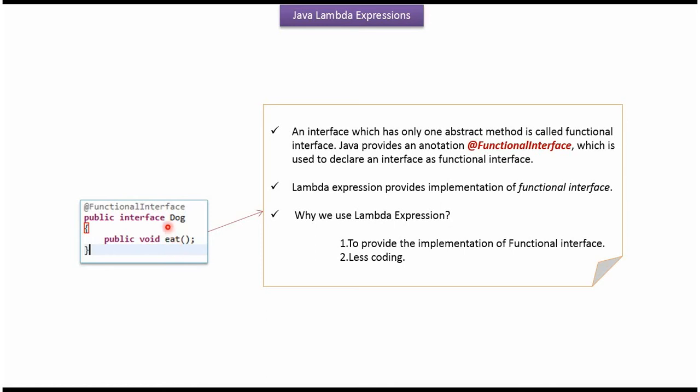If an interface has only one abstract method, then it is called a functional interface. Here I have defined interface dog as a functional interface using the @FunctionalInterface annotation.